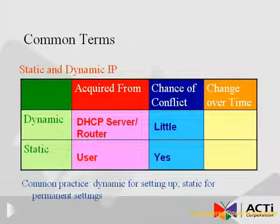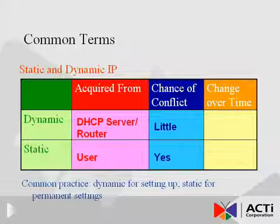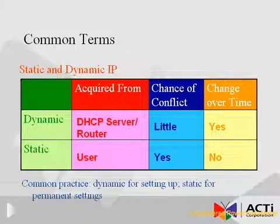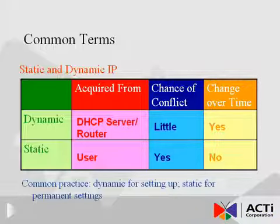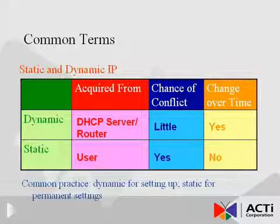Since each device needs to have a unique IP, conflicts can occur if the setup is not done properly. Using a Dynamic IP rarely creates IP conflicts, where a Static IP can sometimes create conflict if care is not taken during setup. A drawback that Dynamic IP has is that it can change over time. If the IP changes, the recorder will no longer be able to make contact with the camera. That is why Static IPs are almost always used at the end of an installation.